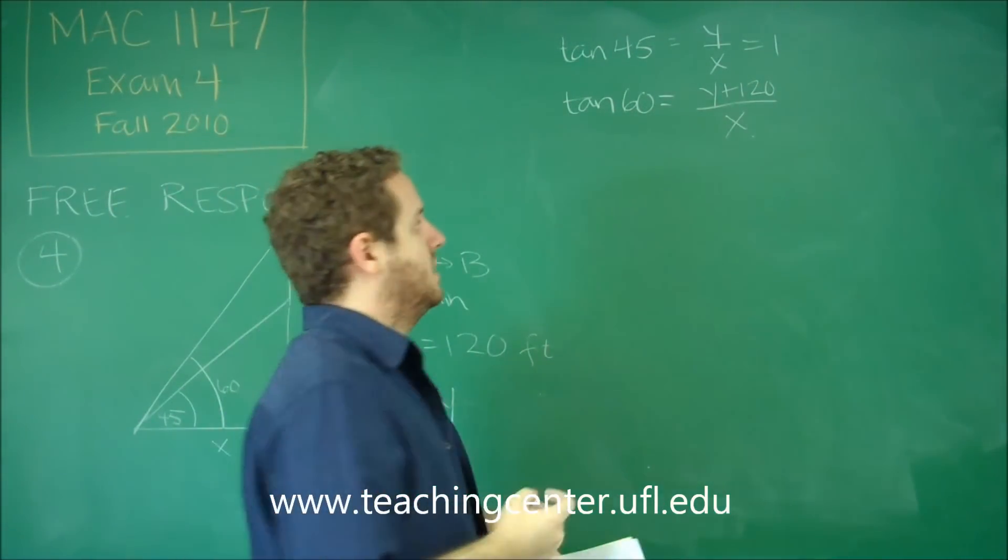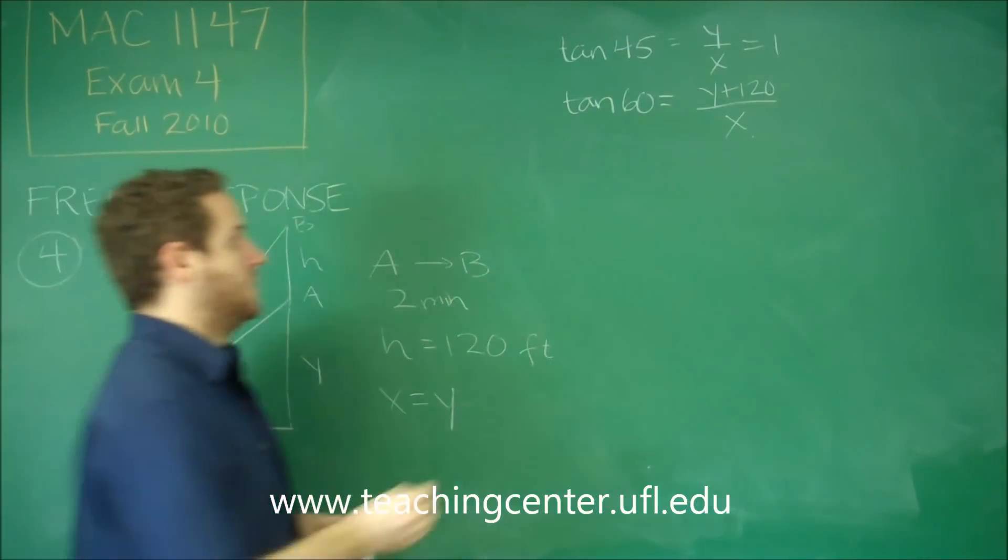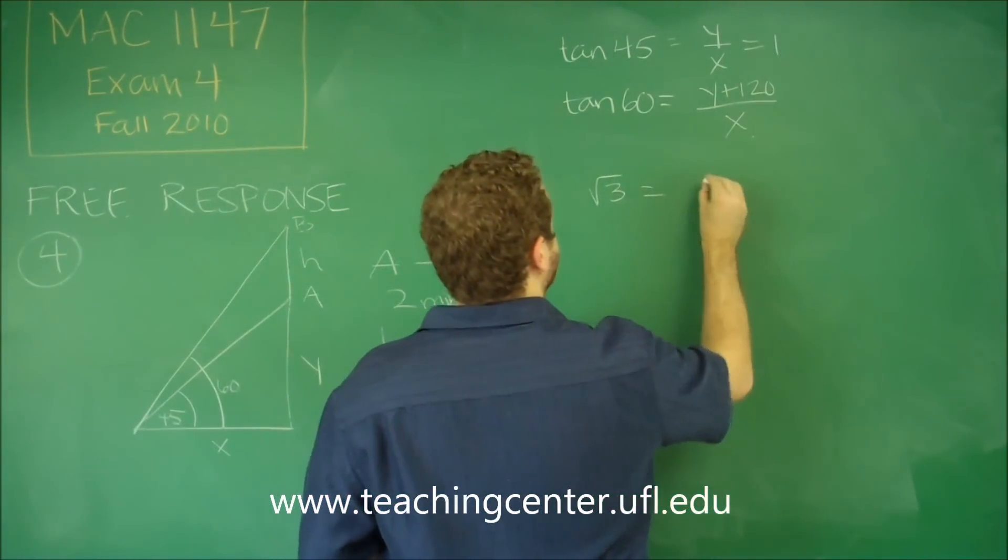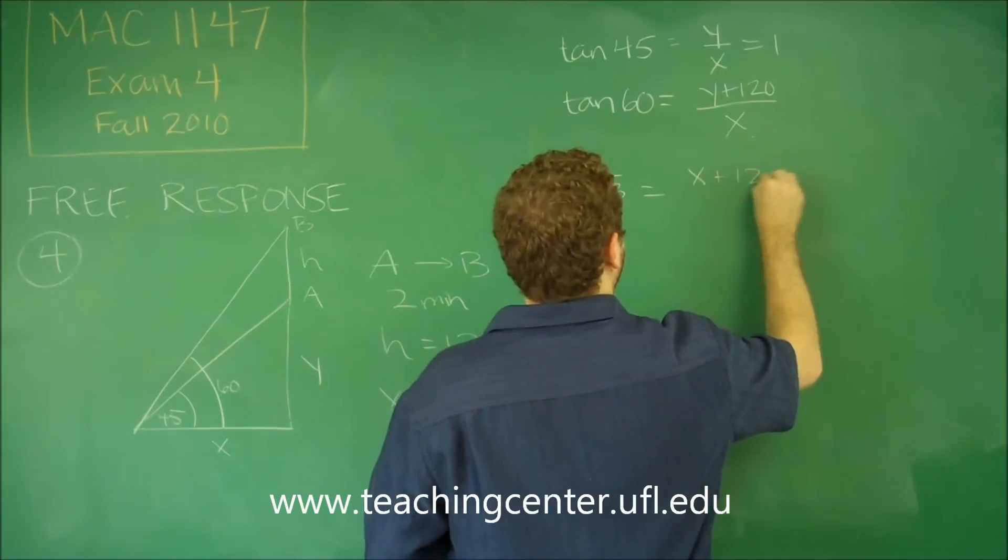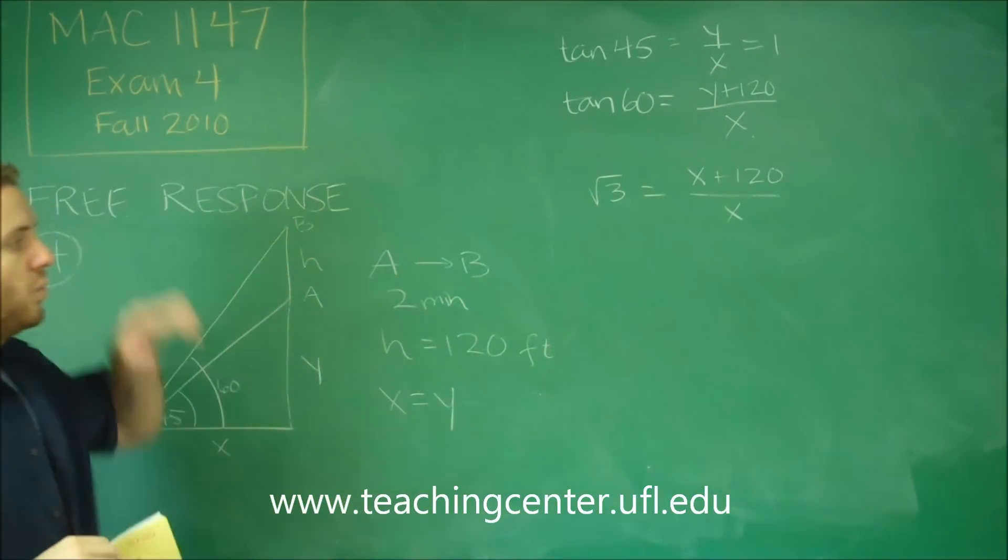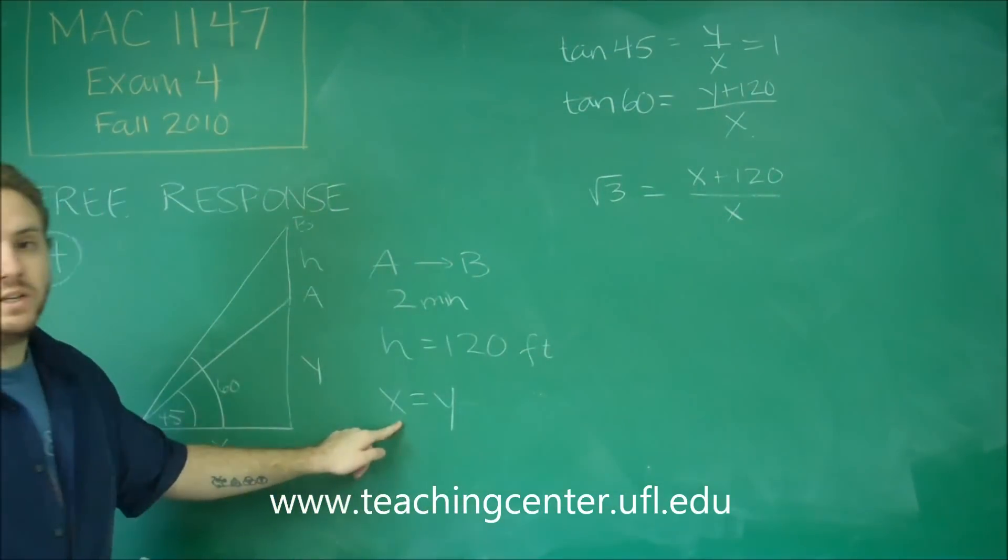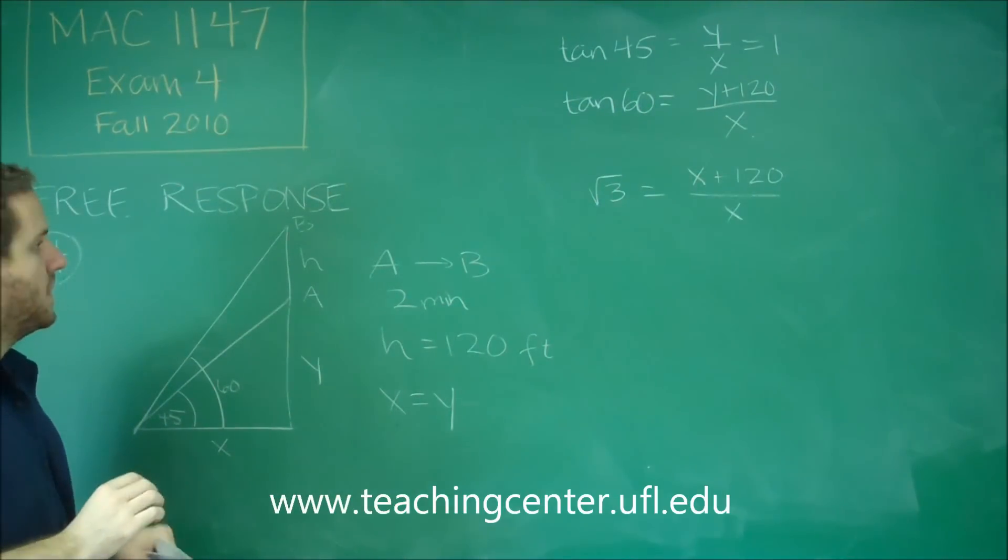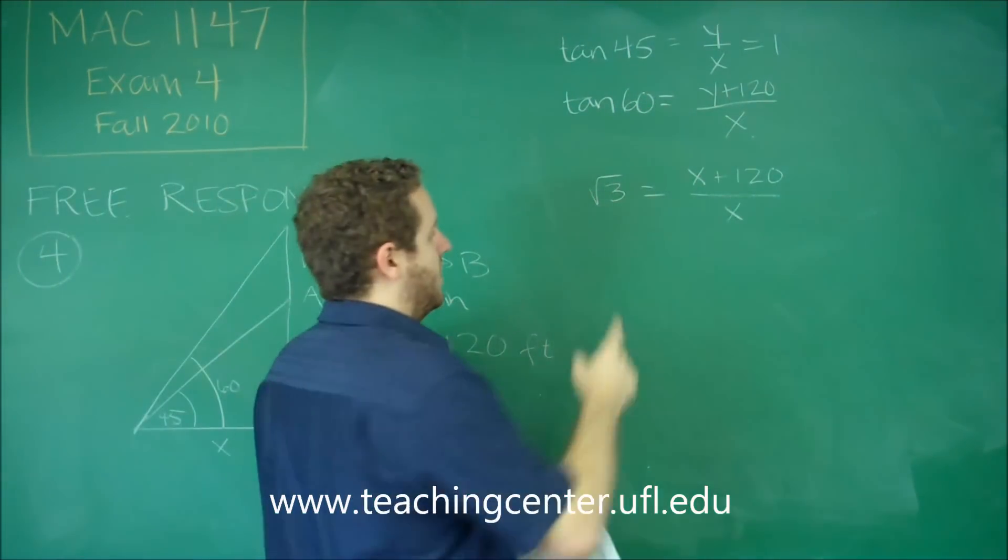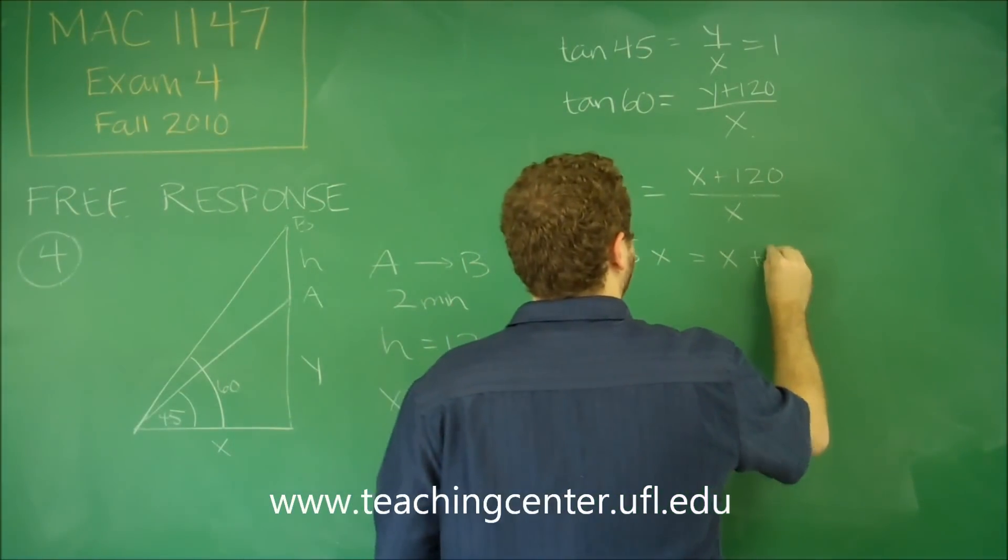So tangent of 60 is sine 60 over cosine 60. That's going to be root 3. So we have root 3 equals X plus 120 over X. I can just put X in for Y because they are equal. So now all we need to do is solve for X. So you can multiply over. So we get root 3X equals X plus 120.